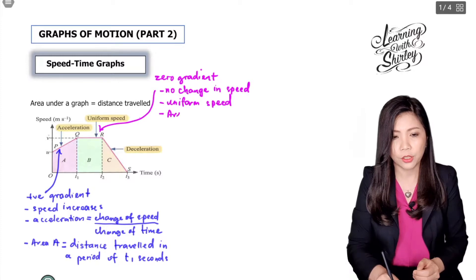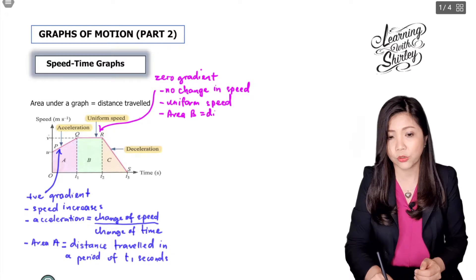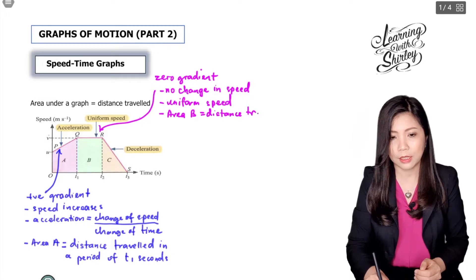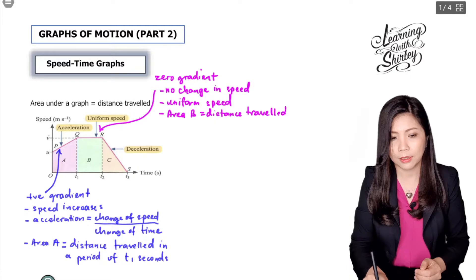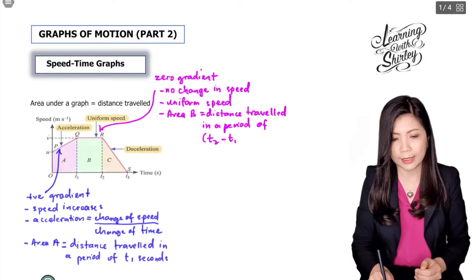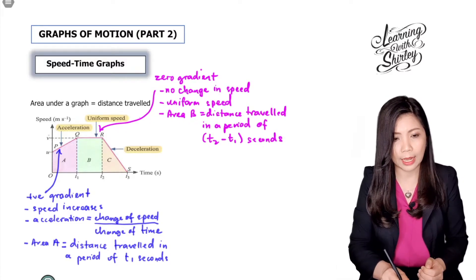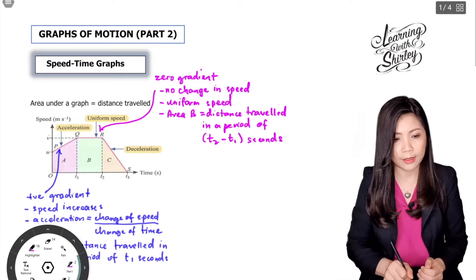Area B represents the distance traveled in a period of T2 minus T1 seconds. That's all about the line QR and the area B.